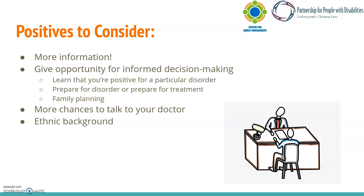Another consideration is that DTC testing can help people with family planning. With certain recessive disorders, some families decide to not have their own children and instead adopt, simply due to the risk of passing on the disorder — though this is not to say that every family should do the same. As for ethnic background, that can provide the opportunity for more information when talking with your doctor. If you think your ethnic background is one specific makeup, then you discover that you actually have another ethnic group in the mix, that can change things. Some ethnic groups have been linked to a higher risk for certain genetic disorders, so the ethnic background information can be incredibly valuable.